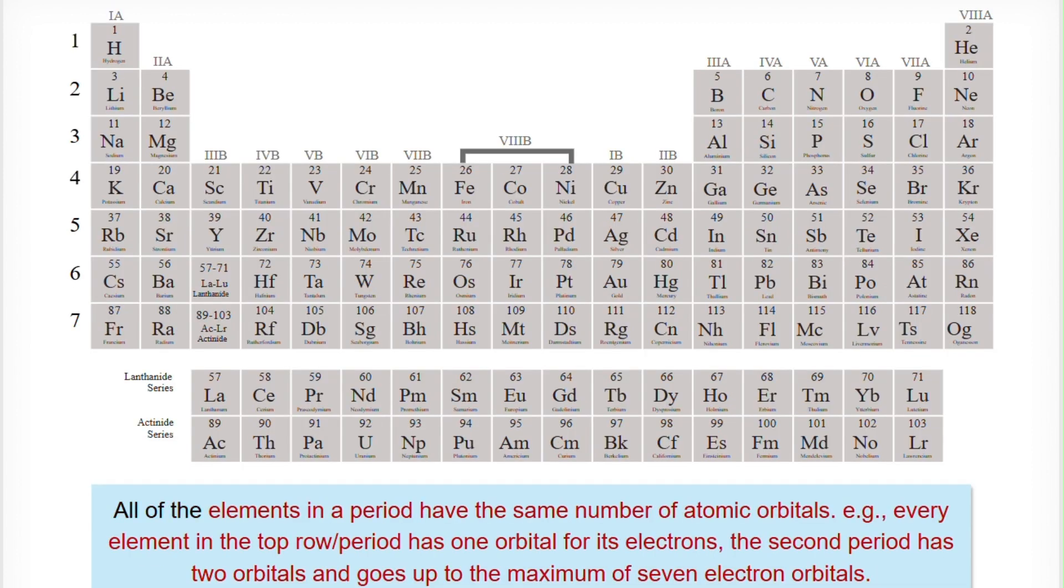All of the elements in a period have the same number of atomic orbitals. Every element in the top row period has one orbital for its electrons. The second period has two orbitals and goes up to the maximum of 7 electron orbitals.